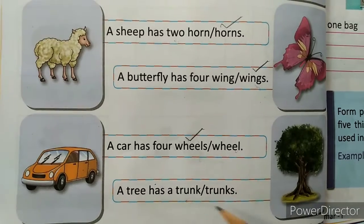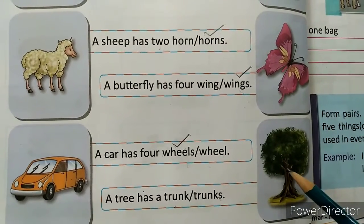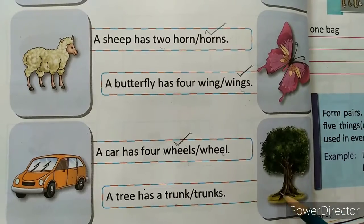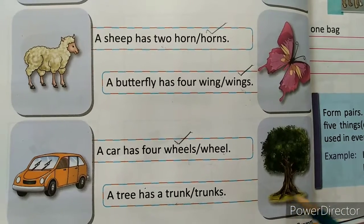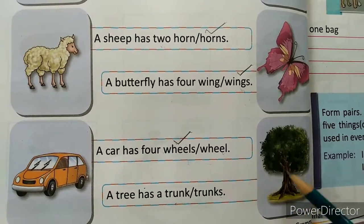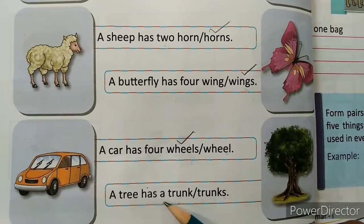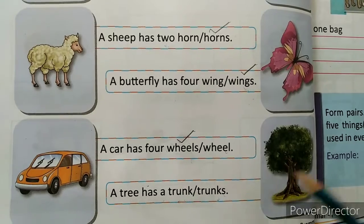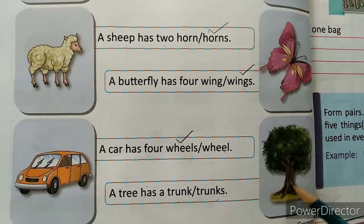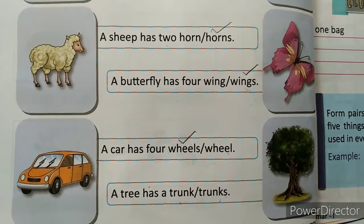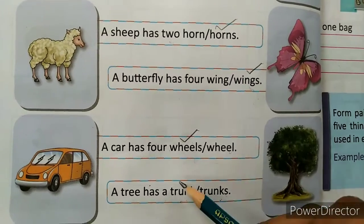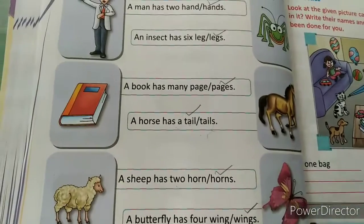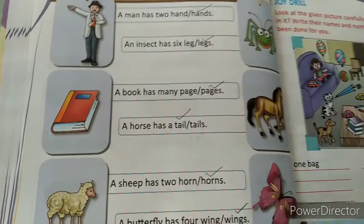Now the last one in this exercise: 'A tree has a trunk' or 'trunks'. This part of the tree is called the trunk, and this is called the root. A tree has only one trunk — the base of the tree — so tick on 'trunk'. This exercise is completed.